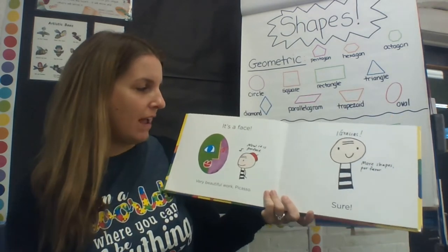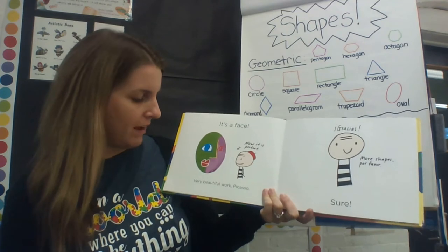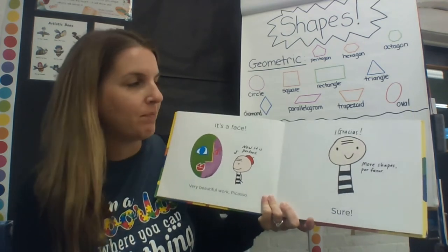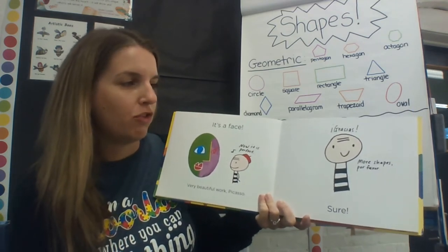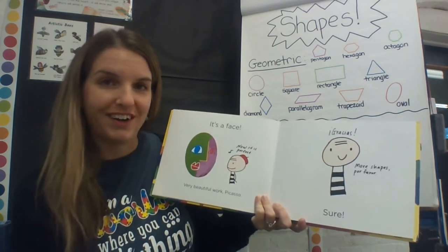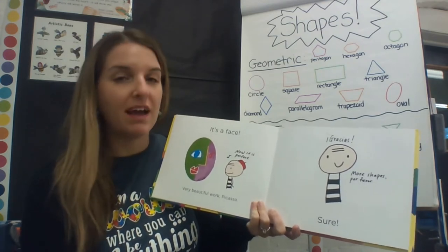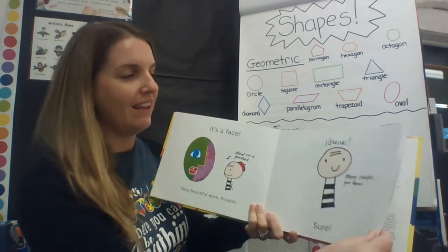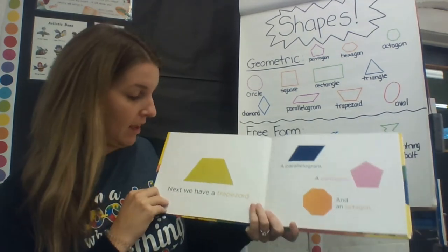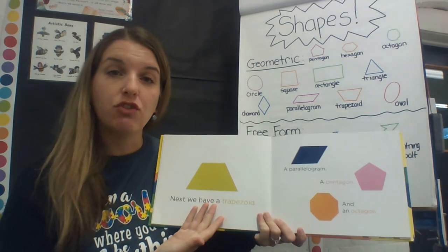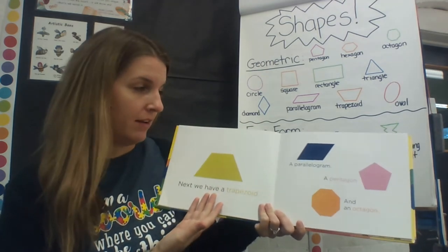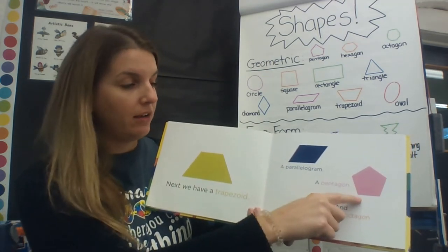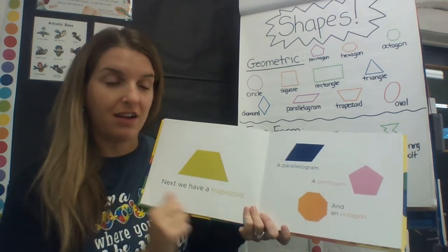It's a face! Now it is perfect. Very beautiful work, Picasso. Gracias! More shapes, por favor. Should we give Picasso some more shapes? I think we should — I want to see what he does with them. Next we have a trapezoid, a parallelogram, a pentagon, and an octagon.